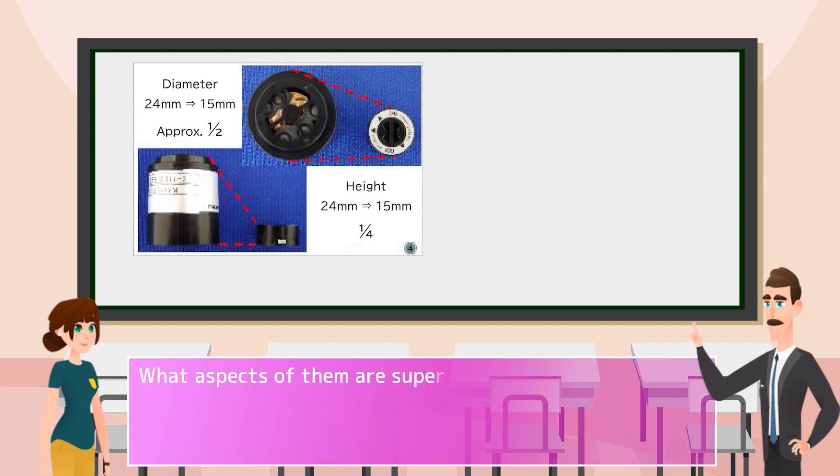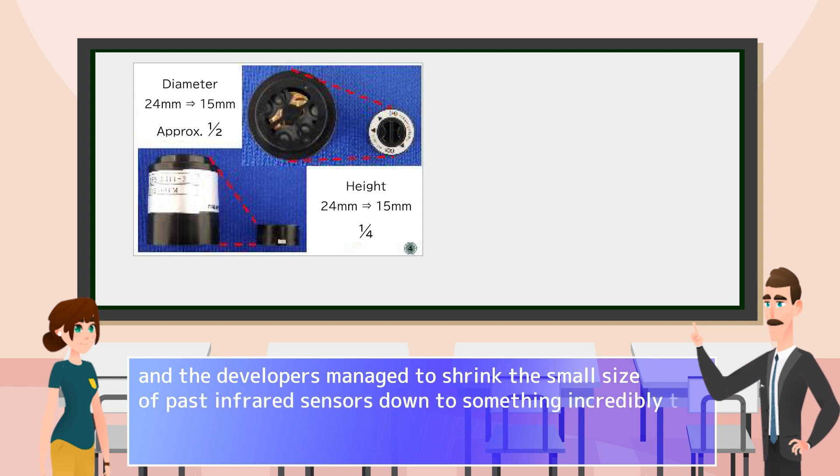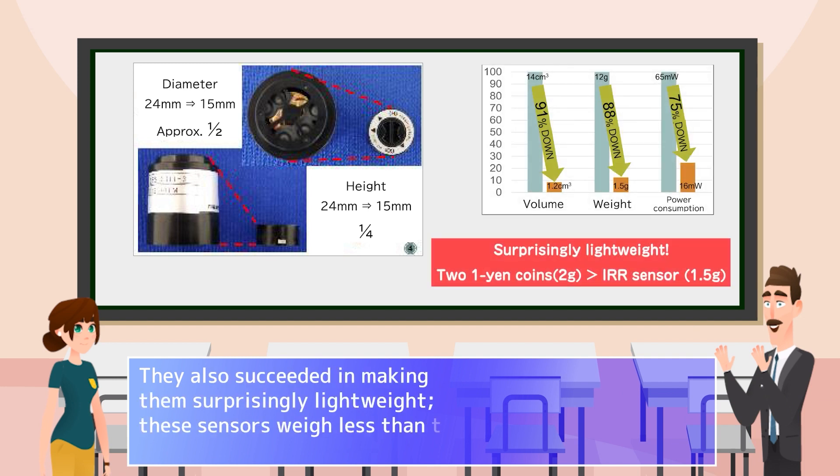What aspects of them are superior? The internal construction of the sensors has been completely revamped, and the developers managed to shrink the small size of past infrared sensors down to something incredibly tiny. They also succeeded in making them surprisingly lightweight. These sensors weigh less than two 1-yen coins.